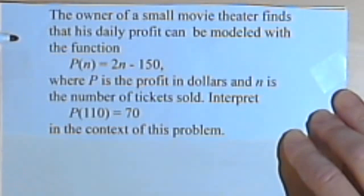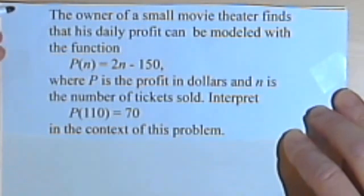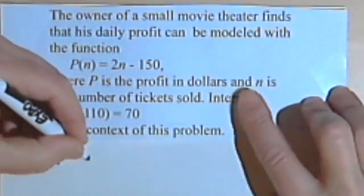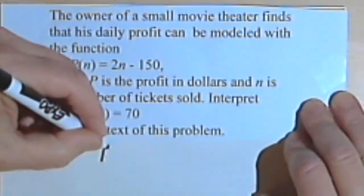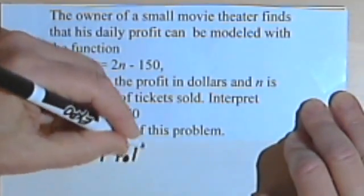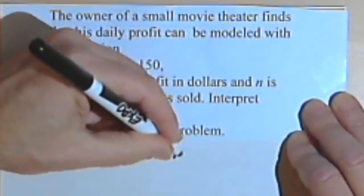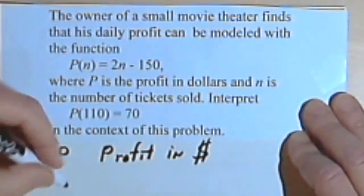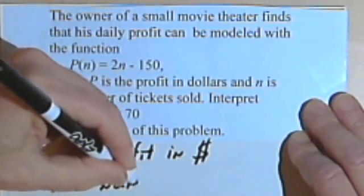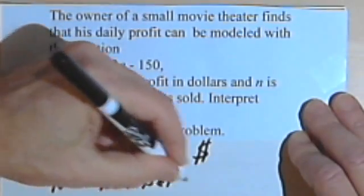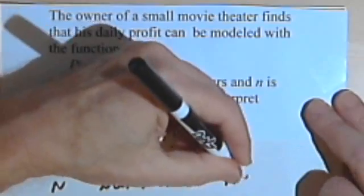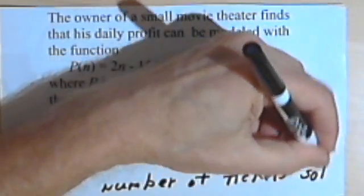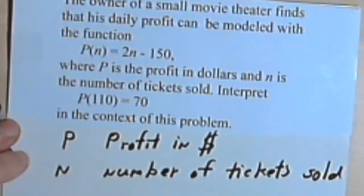This is really much, much easier than it sounds. I know it sounds kind of scary. So let's see what they're telling us. P is the profit in dollars. And n is the number of tickets sold. All we have to do is remember that.